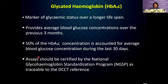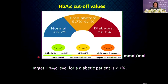Glycated hemoglobin or HbA1c is a marker of glycemic status over a longer period, providing the average blood glucose concentration over the previous three months. However, 50% of the HbA1c concentration reflects the average blood glucose over the last 30 days. These assays should be certified by the National Glycohemoglobin Standardization Program as traceable to the DCCT reference. An HbA1c less than 5.7% (42 mmol/mol) indicates normal, while greater than 6.5% (48 mmol/mol) indicates diabetes. The target HbA1c for a diabetic patient is less than 7%.